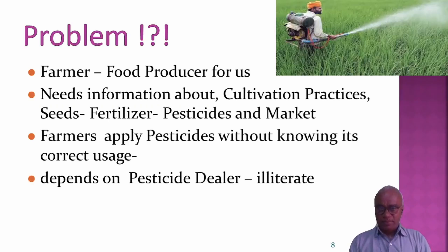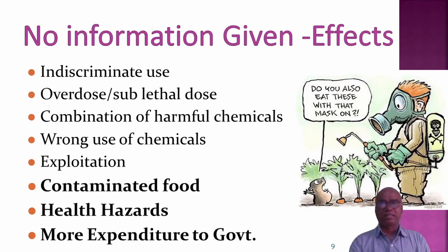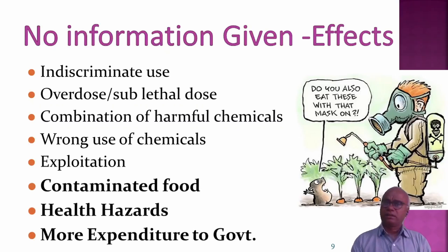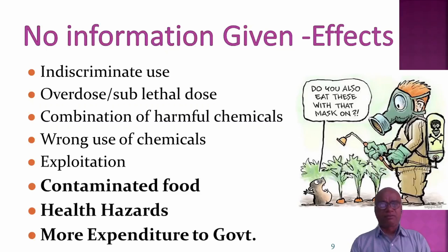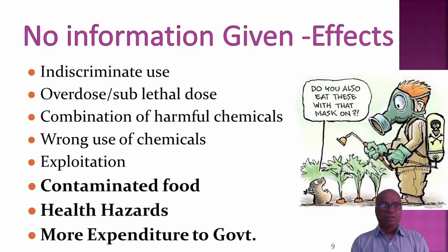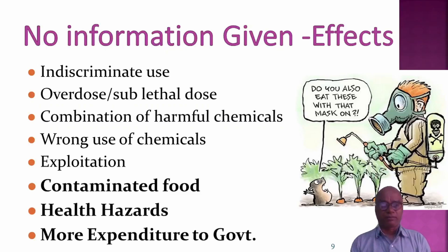The farmer applies pesticides without knowing their correct usage and solely depends on the shopkeeper, who is also illiterate. Without adequate information, the farmer will start using chemicals indiscriminately. Overdose or sublethal dose is possible. Combinations of harmful chemicals are also possible. Wrong use — such as applying a miticide instead of a pesticide — can occur. The farmer gets exploited and ultimately we get contaminated food.